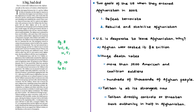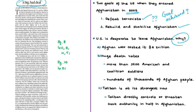The US–Taliban deal has been hailed by many as a successful deal, but the editorial titled 'A Big Bad Deal' points out the dangers involved. The US troops entered Afghanistan after the 9/11 attacks with two goals: first, to defeat the terrorists, and second, to rebuild and stabilize Afghanistan. Whether the US achieved these goals is the big question that will be answered at the end of this editorial.